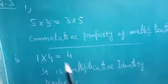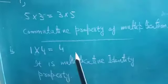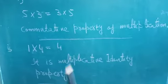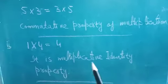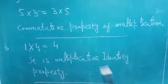The second statement is 1 into 4 which is equal to 4. This is the multiplicative identity property.